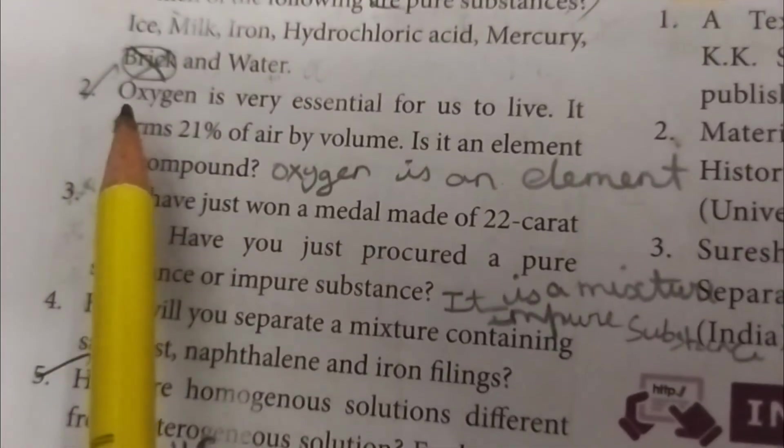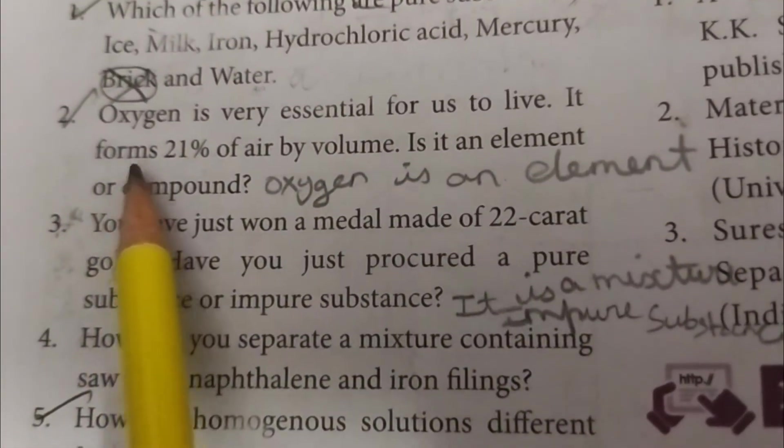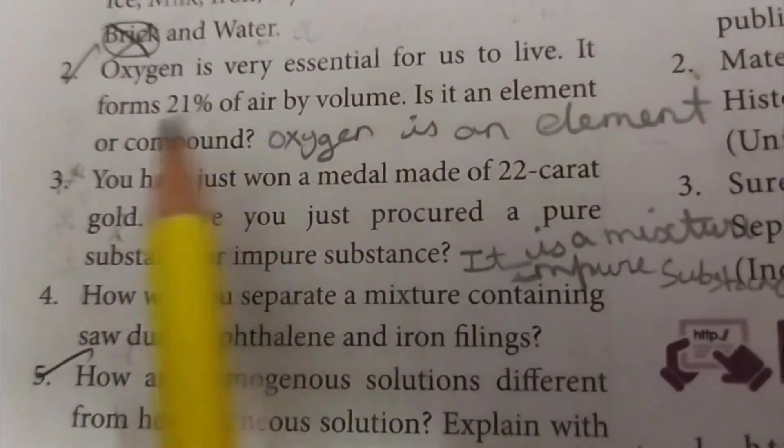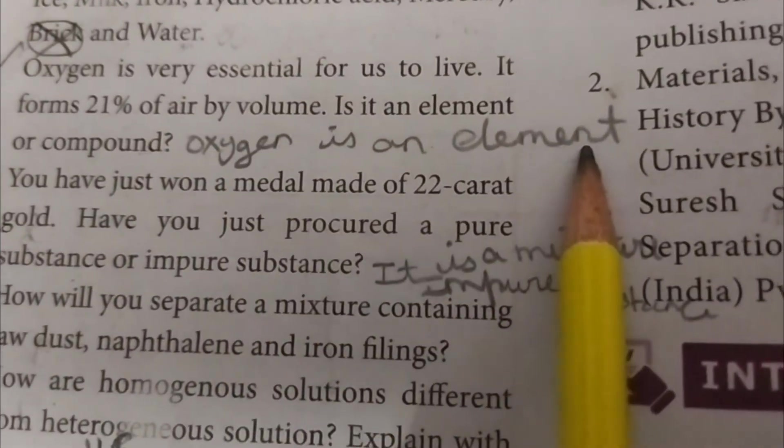Second question: Oxygen is very essential for us to live. It forms 21% of air by volume. Is it an element or compound? Answer: Oxygen is an element.